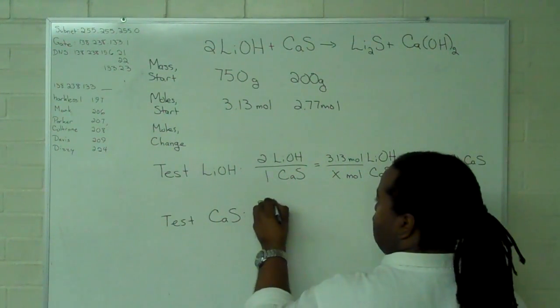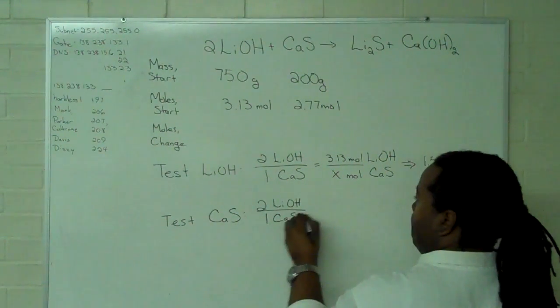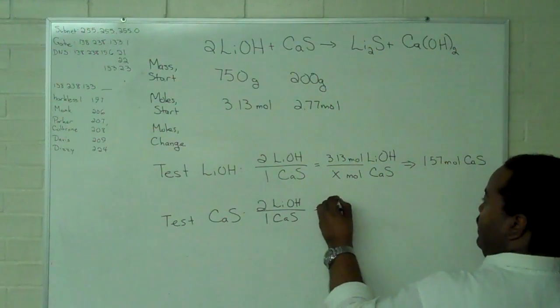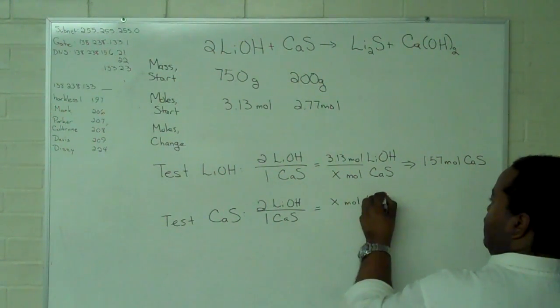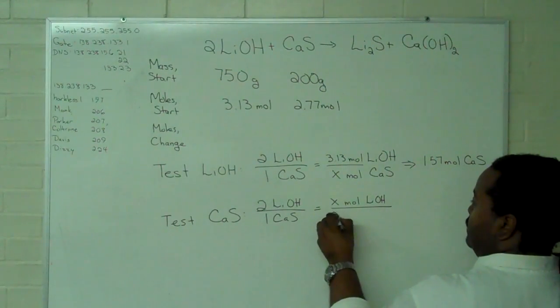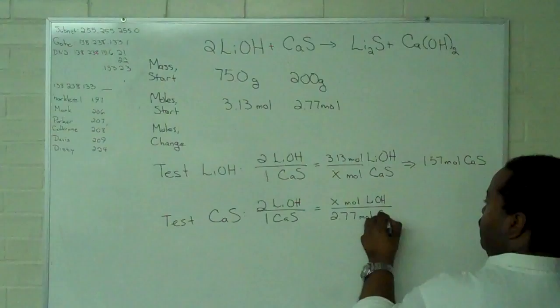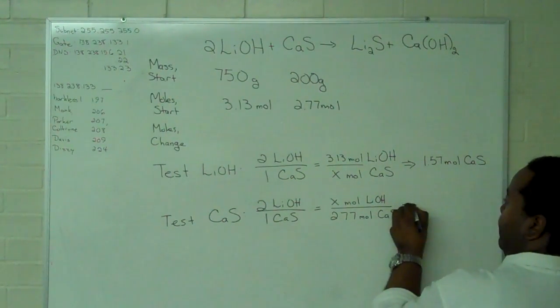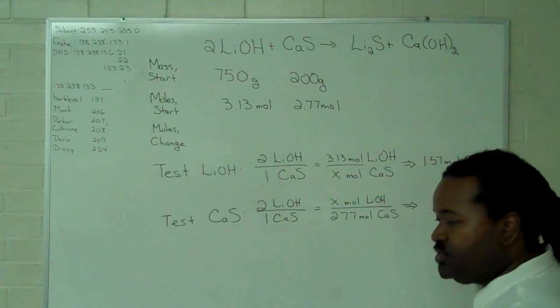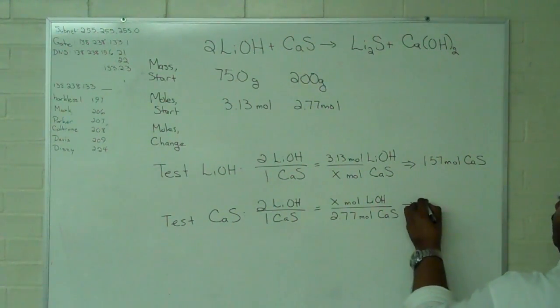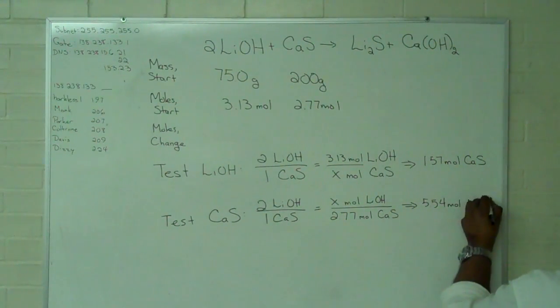We can use the same mole ratio from the balanced reaction to determine how many moles of lithium hydroxide we'll need to completely use up 2.77 moles of calcium sulfide. And so, when we cross multiply here and solve for X, we find that we will need 5.54 moles of lithium hydroxide.